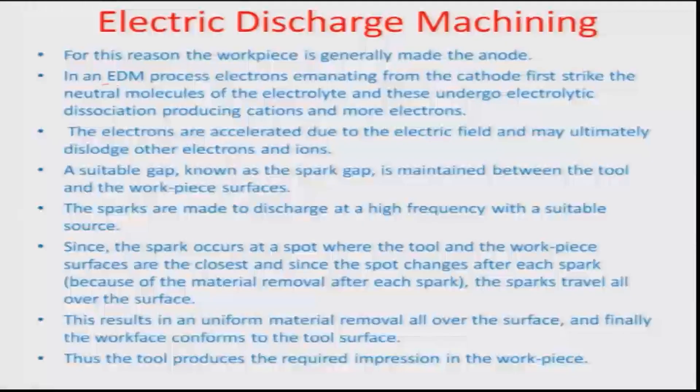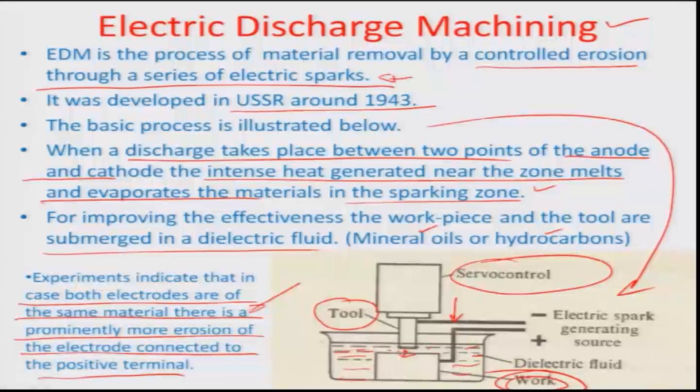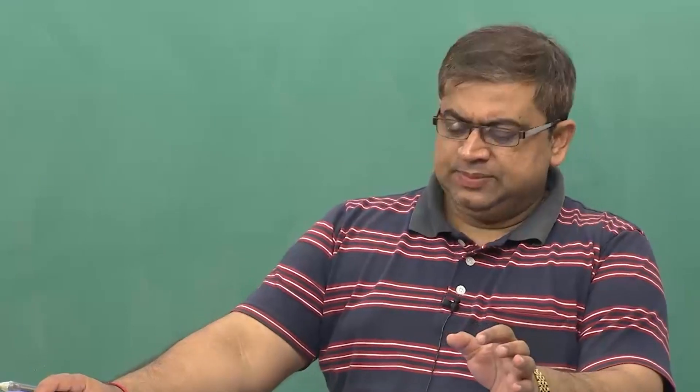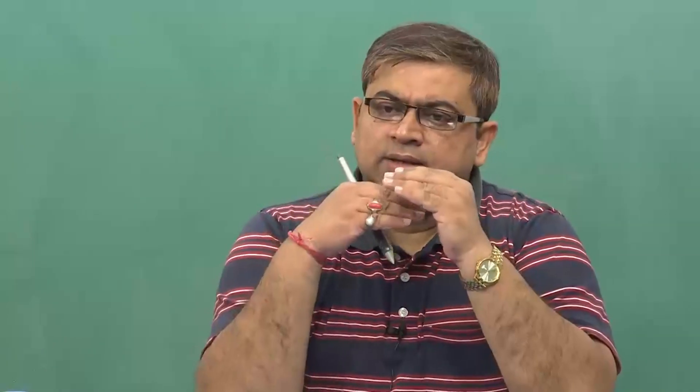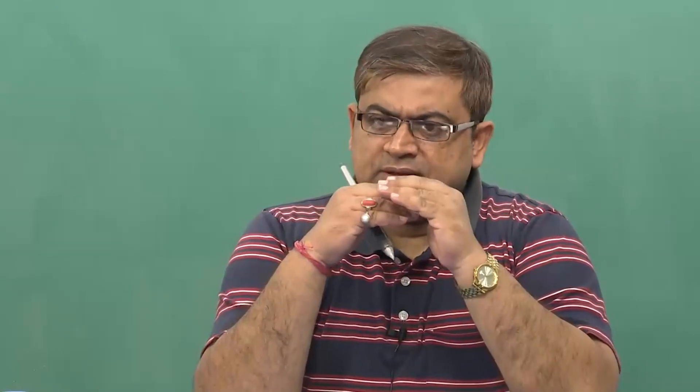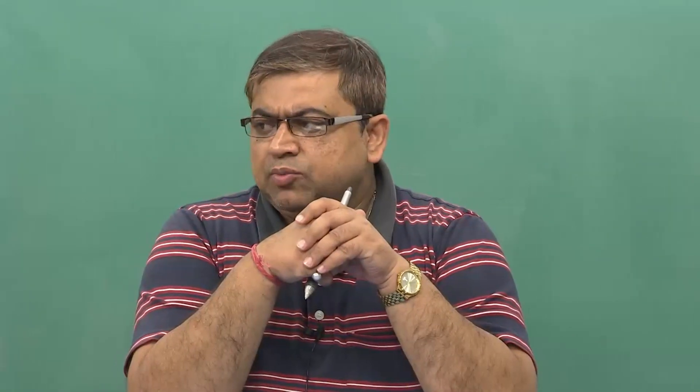In the EDM process, electrons emanating from the cathode first strike the neutral molecules of the dielectric — the tool is made the cathode and the workpiece the anode. There is a cathode, an anode, and an insulating dielectric medium in between. As the distance between the cathode and anode is reduced, the electric field may exceed the breakdown electric field needed for the dielectric to break down fully — and that is when a discharge can occur.